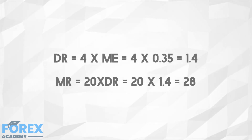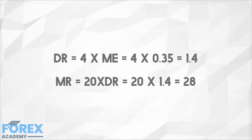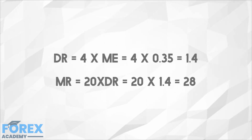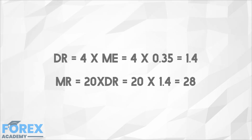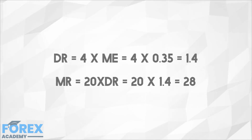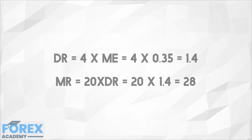Therefore, a trader risking $100 per trade would get $2,800 monthly on average. By defining our monthly objectives, once knowing ME and the number of trades the system delivers daily or monthly, we can determine the risk incurred. For example, a bolder trader would like to triple that amount by tripling the risk on each trade. Why not 10-fold or 100-fold risk to aim for $280k per month income?